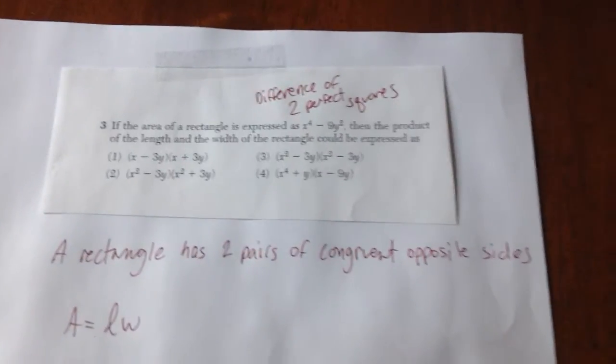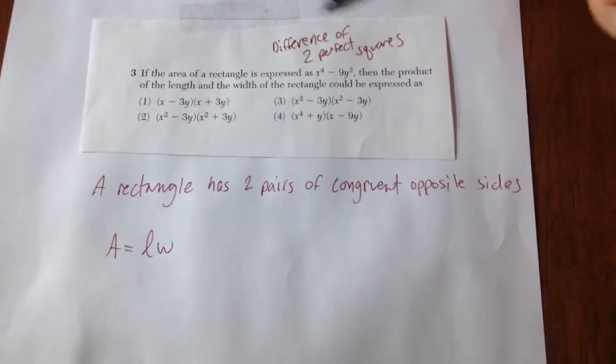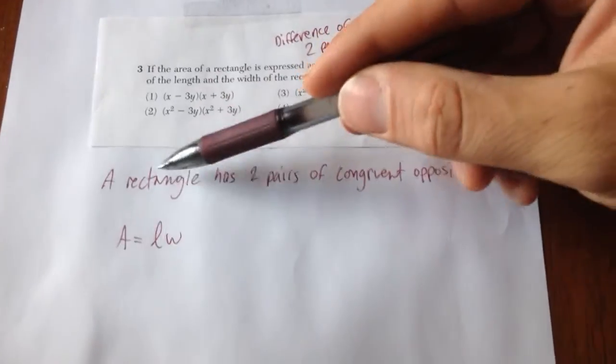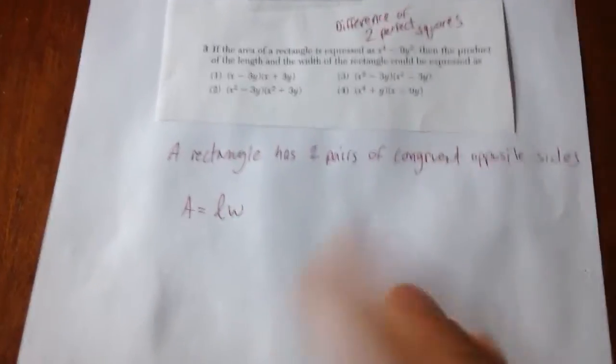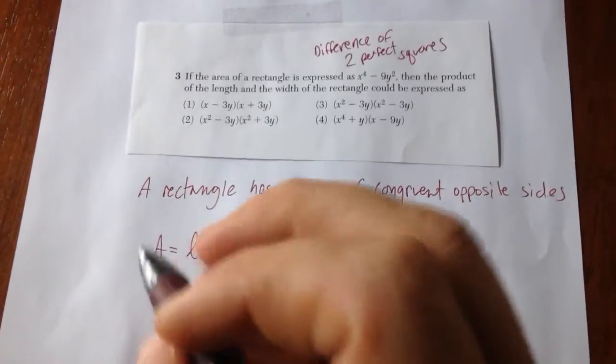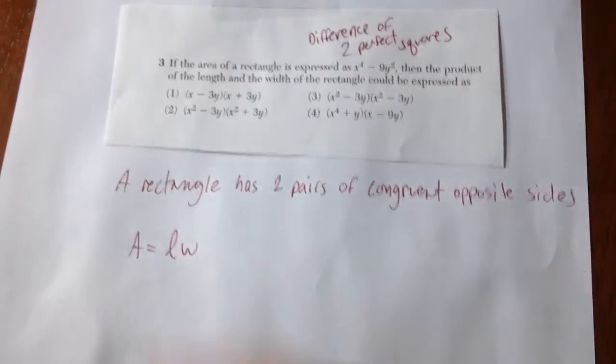Number three is simply a difference of two perfect squares problem disguised in an area question. It's telling you the area of a rectangle is expressed as this binomial. Remember a rectangle has two pairs of congruent opposite sides. I know that I could find the area of a rectangle by doing area equals length times width. Now I know the area is x to the fourth.